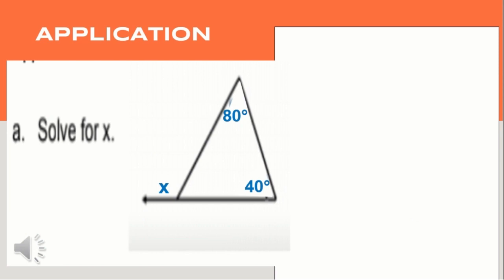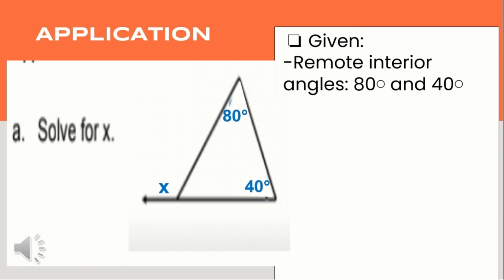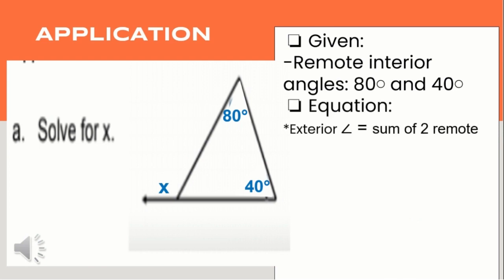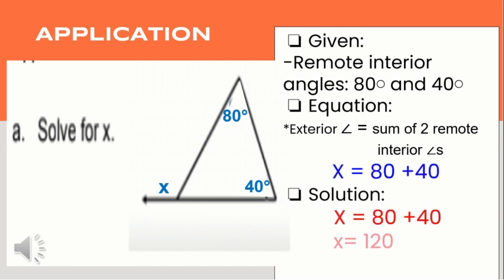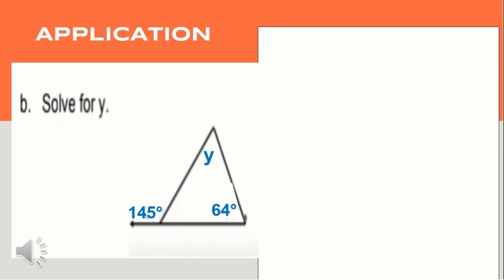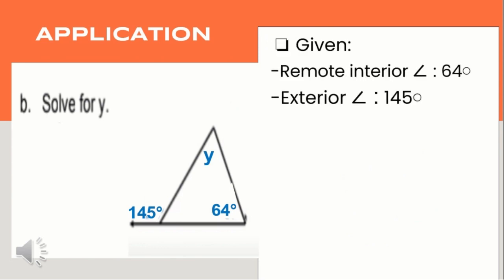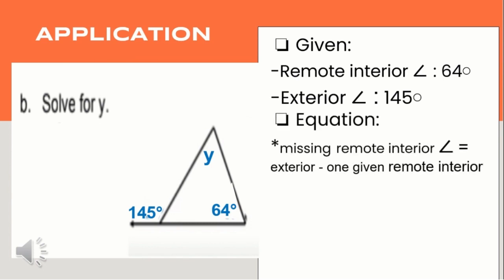For the next example, the measures of the remote interior angles are 80 degrees and 40 degrees, and the measure of the exterior angle is missing. The equation is: exterior angle equals the sum of the two remote interior angles. So X equals 80 plus 40, and X equals 120. Next, we have a remote interior angle of 64 degrees and an exterior angle of 145 degrees, with the other remote interior angle missing. So Y equals 145 minus 64, and Y equals 81.